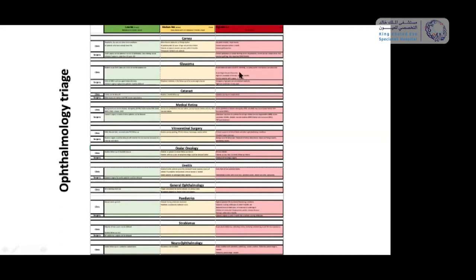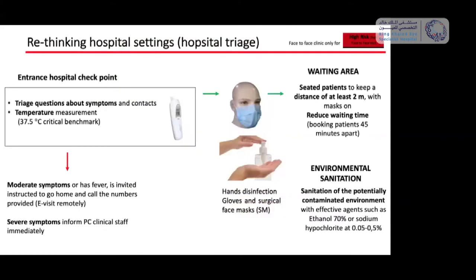If the patient must be seen face-to-face — meaning high risk — there is an entrance hospital checkpoint serving as another triage level. If they have a temperature above 37.5°C with moderate symptoms, they go home and are visited remotely. If they have severe symptoms, we inform primary care. If the temperature is below 37.5°C, after hand disinfection, gloves, and surgical face mask, they go to the waiting area seated at over two meters distance. We try to reduce waiting time by scheduling patients every 30 to 45 minutes, with sanitation of the potentially contaminated environment after each single visit.